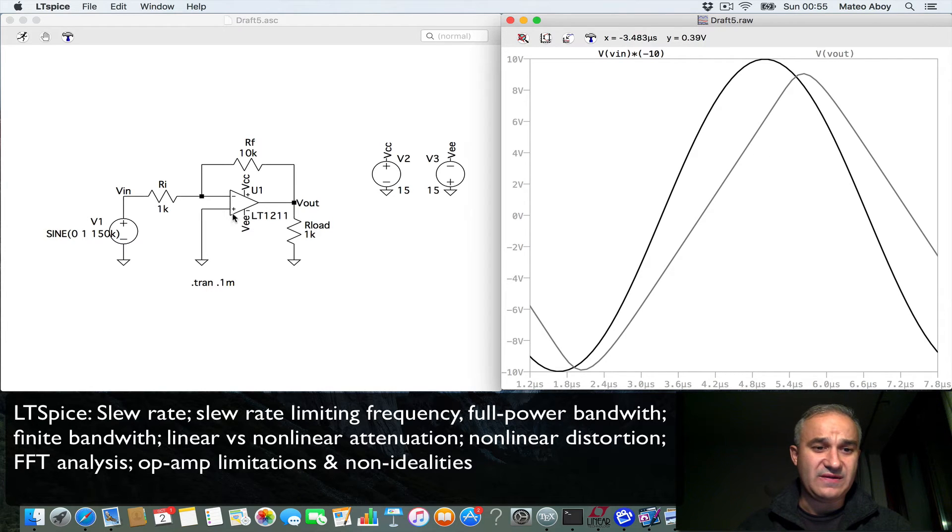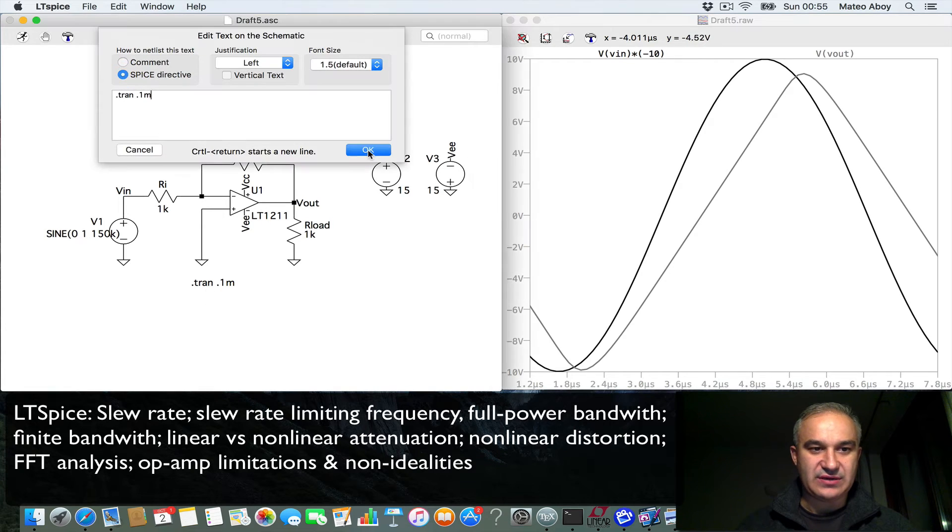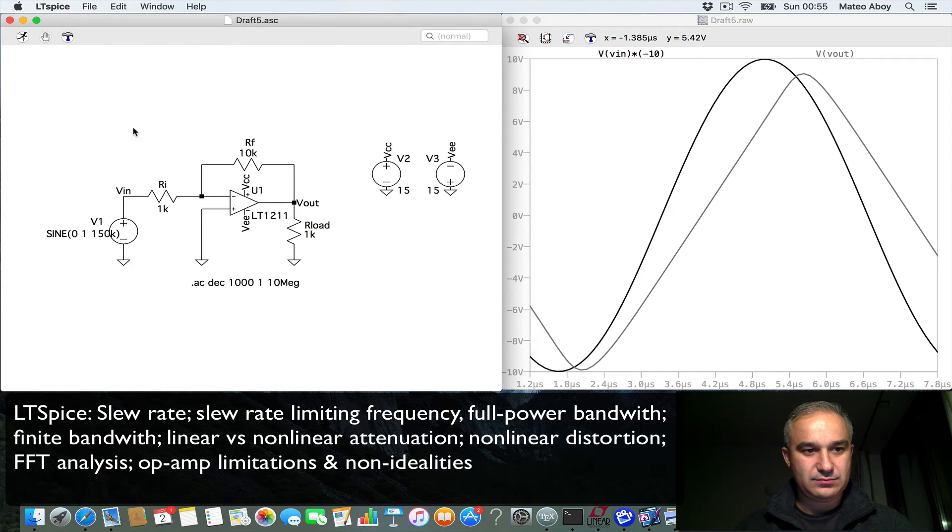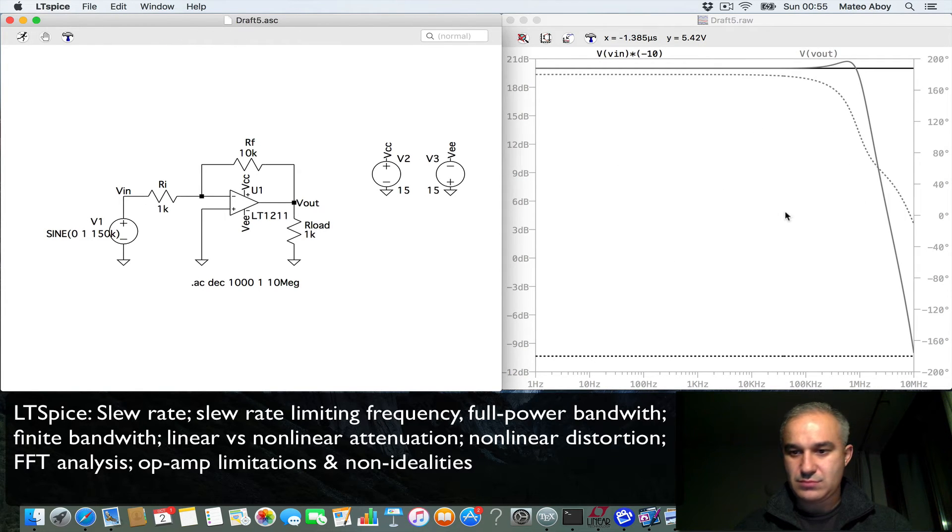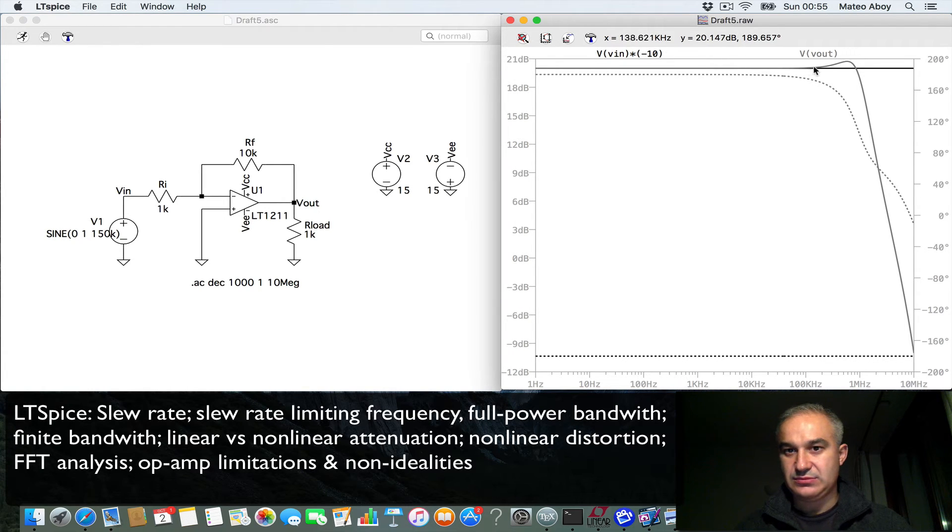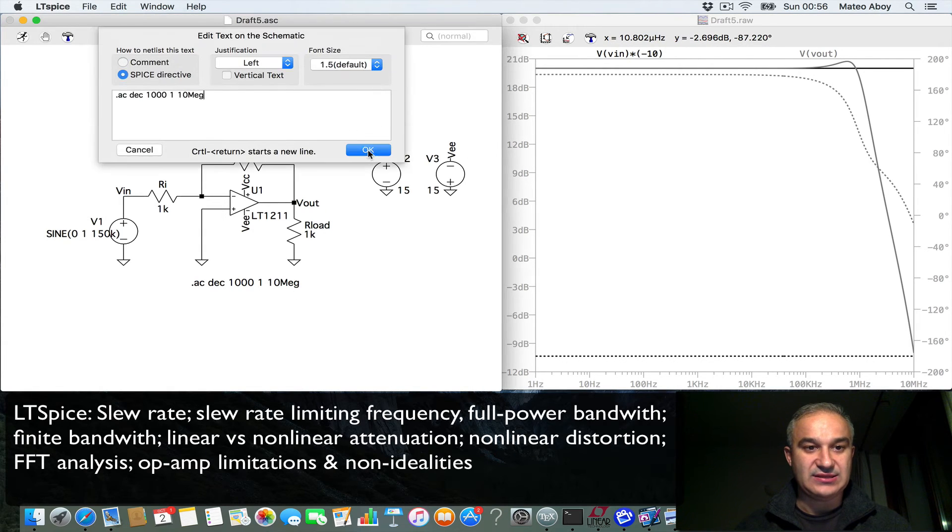If you remember when we did the AC analysis, actually, let's just do it here for a second. If we do an AC analysis, AC in decibels, 1000 points, 1 to 10 meg. You can see that at 100 kHz or 150, we should be fine. There should not be attenuation. But we see, when we do a transient analysis.